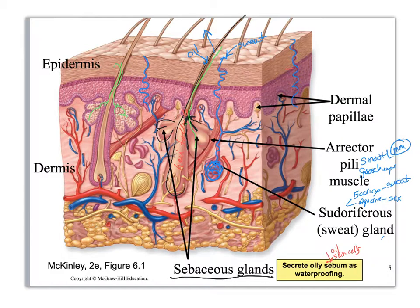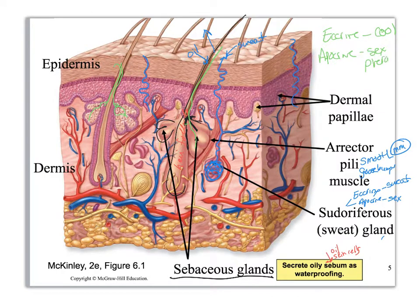Let me add one more thing. Eccrine — what I want you to remember in terms of function is it cools you off, it's for thermoregulation. Apocrine — I want you to think sex, pheromones. These actually only become functional after we go through puberty.